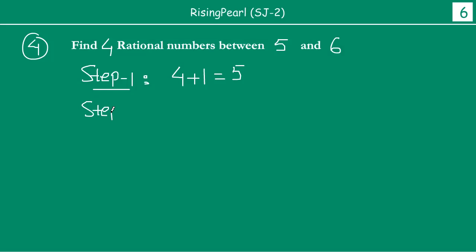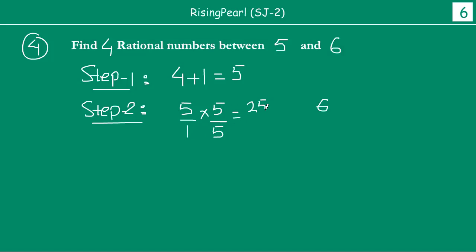Now we talk about step number 2. Step 2 में, हम each of the integers को लिख लेते हैं जिनके बीच हमें numbers चाहिए — so we have 5 and 6. Each of these numbers की numerator और denominator को हम step 1 में मिले number 5 से multiply करते हैं. So, 5 times 5 is 25 over 5, and 6 times 5 is 30 over 5.